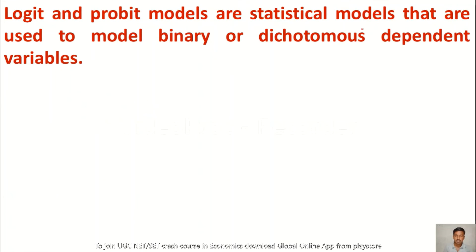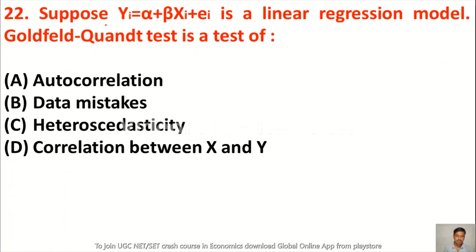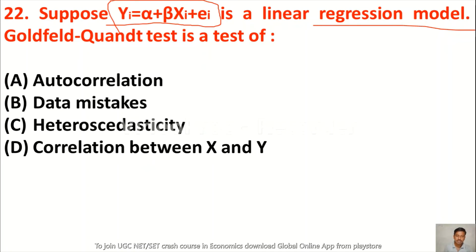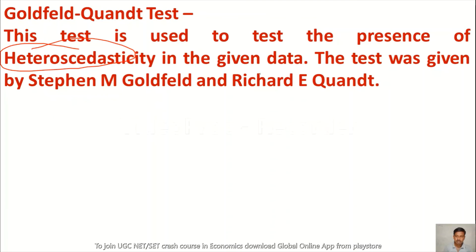Question 22: Suppose Yi = α + βXi + εi is a linear regression model. The Goldfeld-Quandt test is a test of — autocorrelation, data mistakes, heteroscedasticity, or correlation between x and y. The Goldfeld-Quandt test is used to test the presence of heteroscedasticity in given data, so option C is correct. This test is named after Stephen M. Goldfeld and Richard E. Quandt.